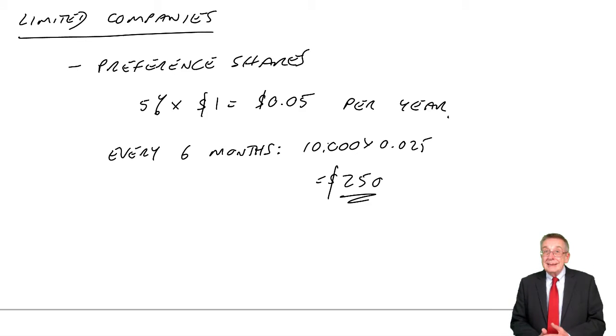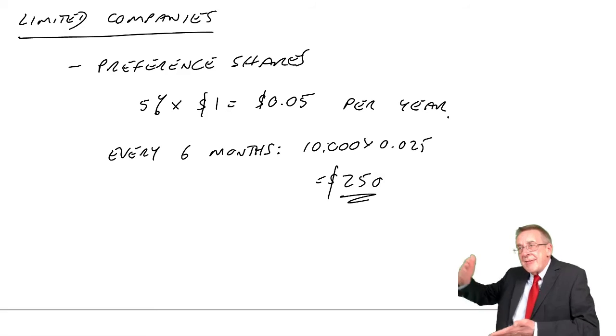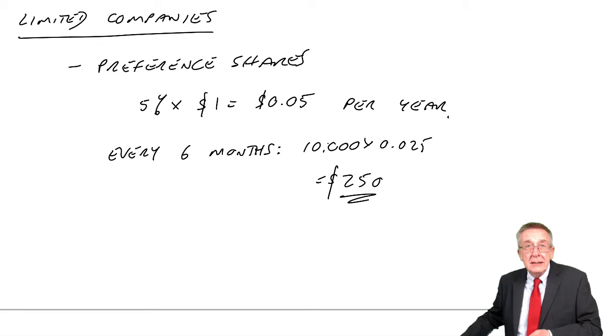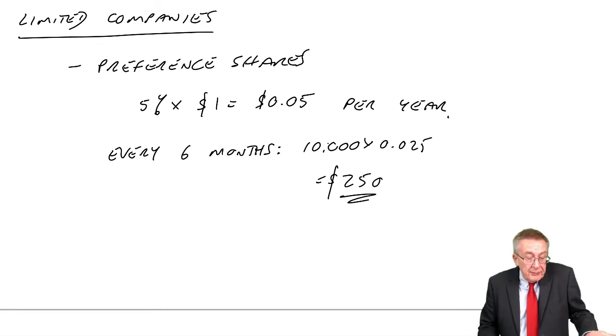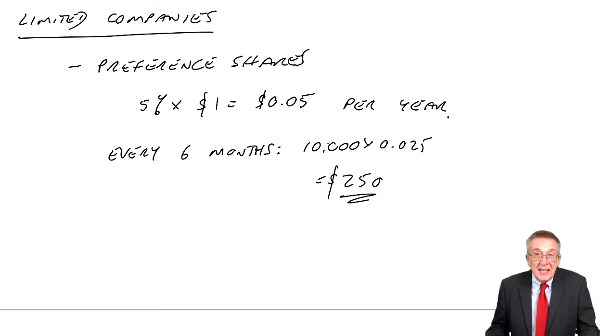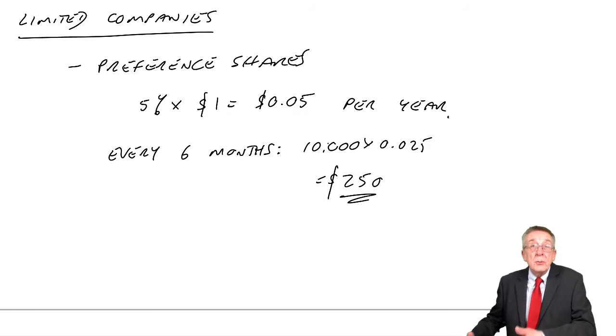Well, if they're redeemable, it's just like taking a loan. You know, if you take a loan from the bank, you'll pay interest each year, and then, 5 years, 10 years, whatever, you'll repay. Redeemable preference shares get dividend each year, but it's a bit like interest, it's fixed. And then, in 5 years, 10 years, or whatever, you'll be repaid.